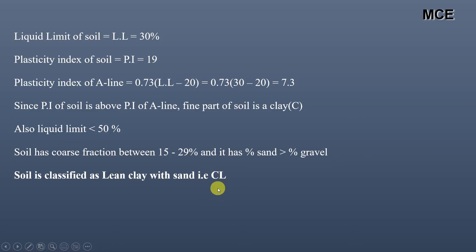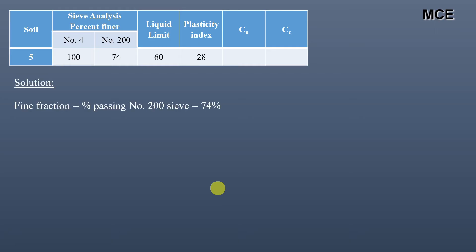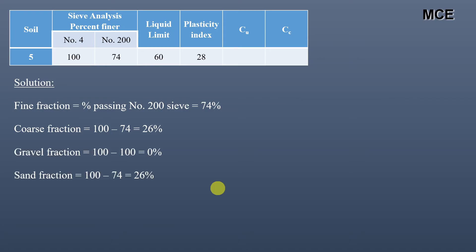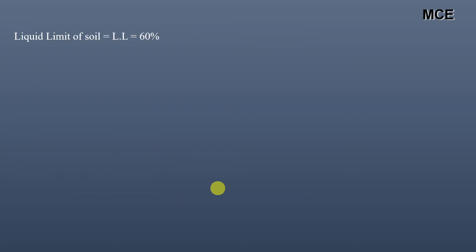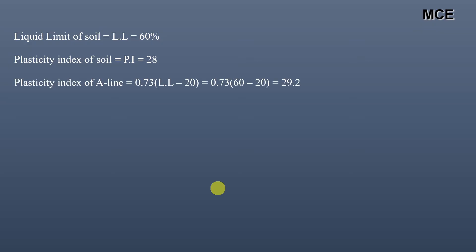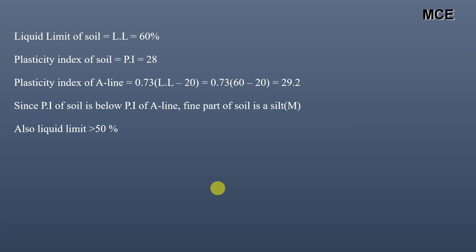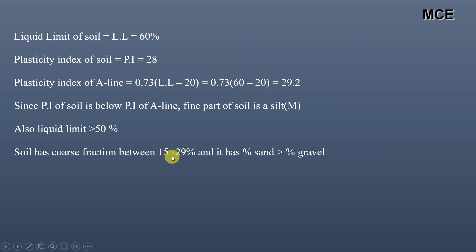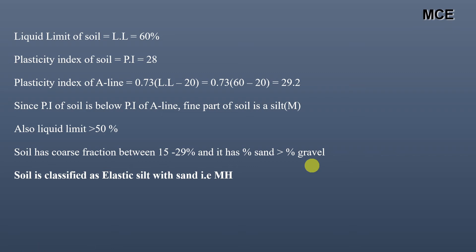For soil 5, fine fraction is 74%, coarse fraction is 26%, gravel fraction is 0%, sand fraction is 26%. More than 50% passes sieve 200, so it is a fine-grained soil. Liquid limit is 60%, PI is 28%, A-line PI is 29.2. This time the PI of the soil is below the A-line PI, meaning the fine part is silt — symbol M. Liquid limit is greater than 50%, and coarse fraction is between 15–29% with sand greater than gravel, so the soil is Elastic Silt with Sand, group symbol MH.